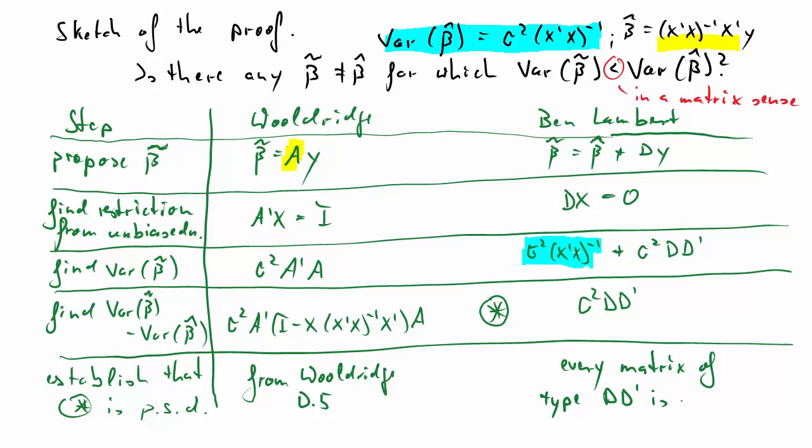So, let's recap how the proof works. We propose an alternative estimator, beta tilde. We find out what its variance is, conditioning on having an unbiased estimator. Once we find that variance, we find out what the difference of that variance to the variance of the OLS estimator is. And then, eventually, we establish that that difference is positive, regardless of how we define the different estimators or what the particulars of the estimators are. And by showing that this difference is positive, we have established that there cannot be another estimator of the form beta tilde that has a variance that is smaller than the OLS estimator variance.